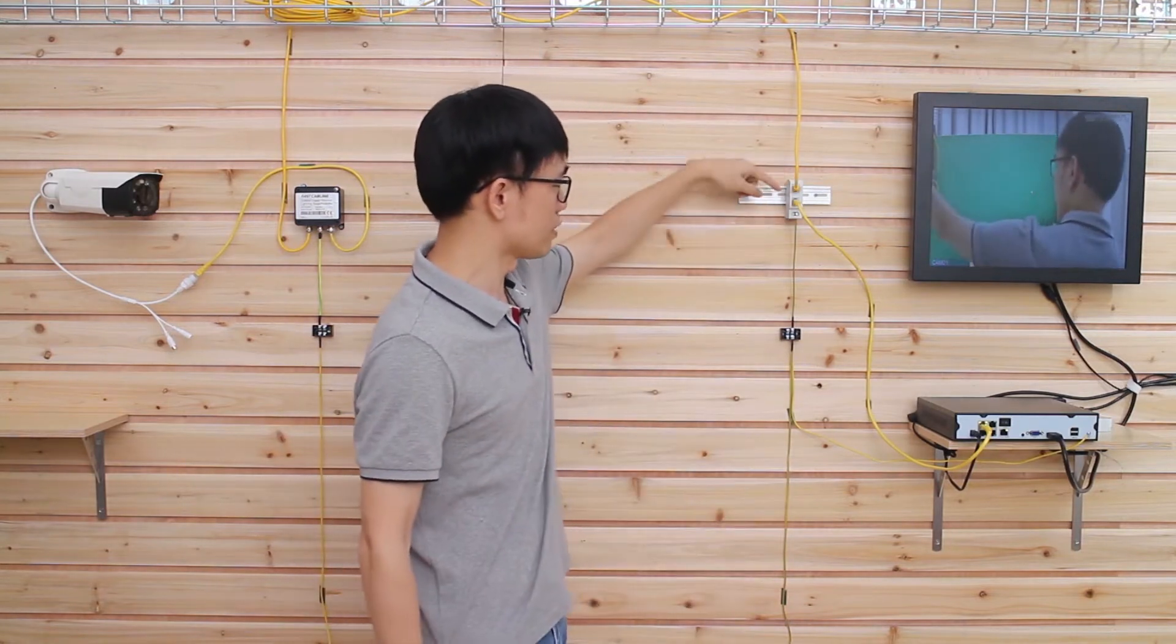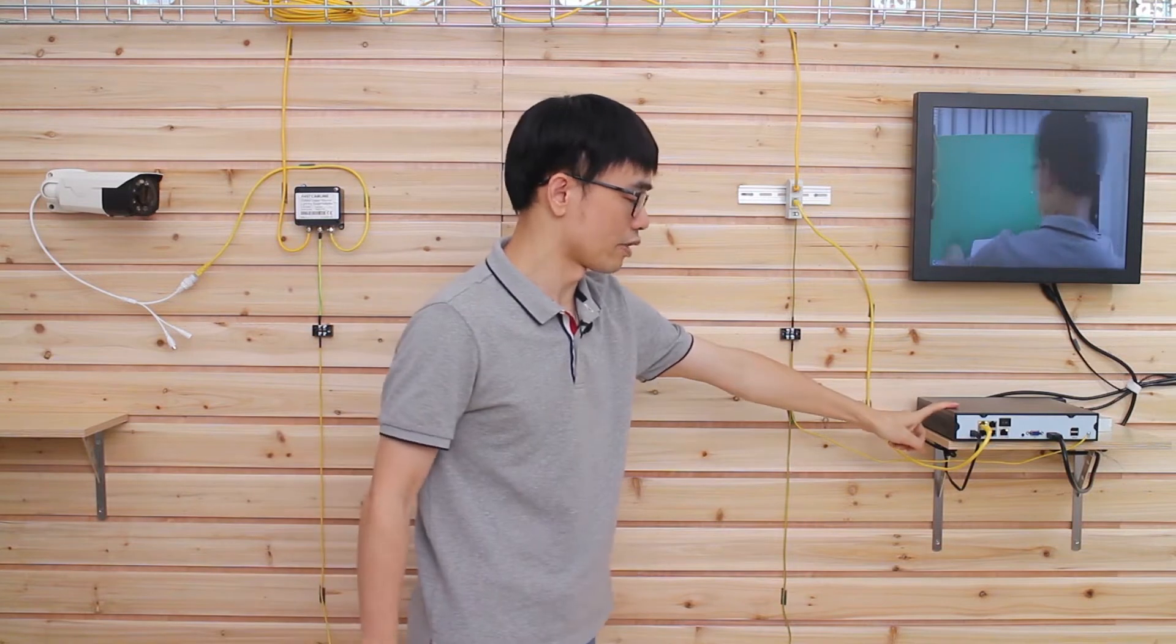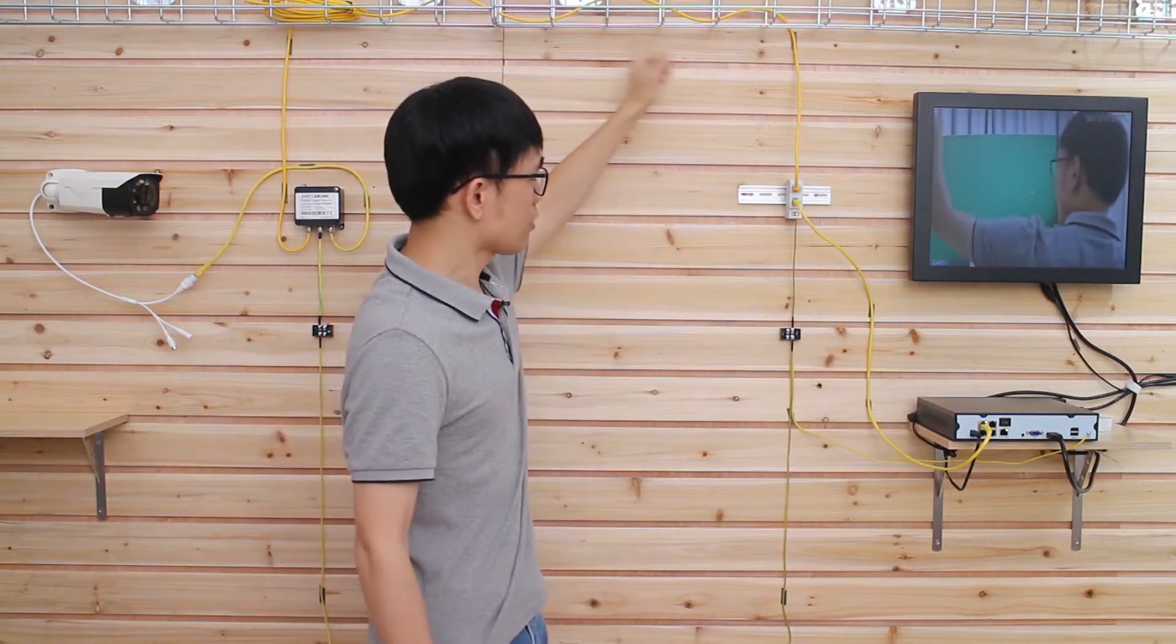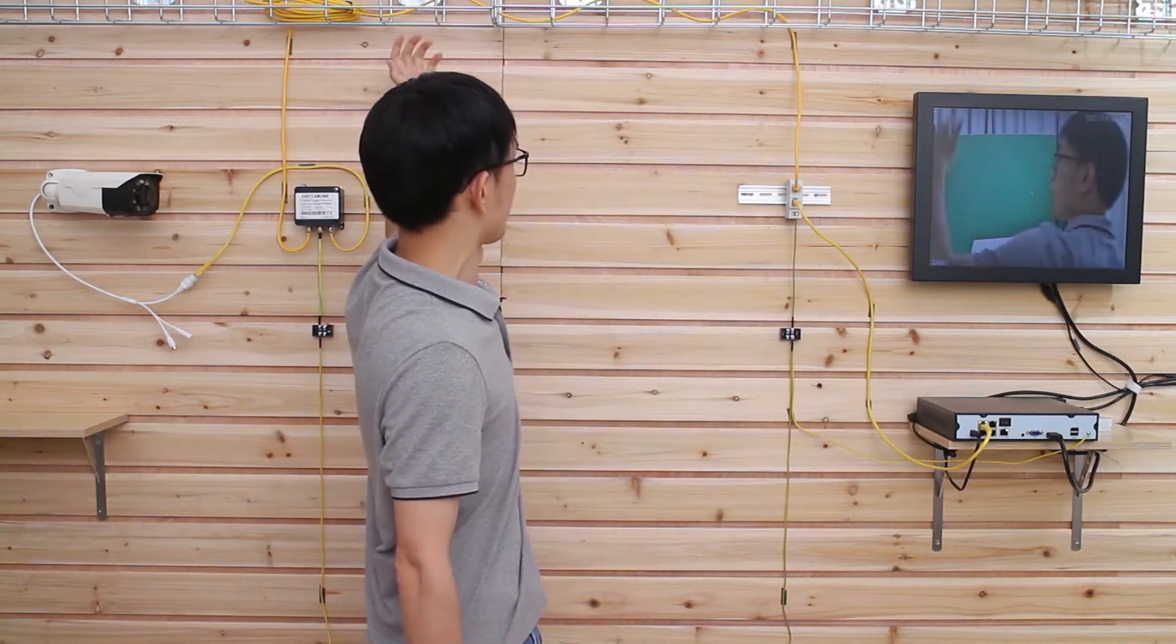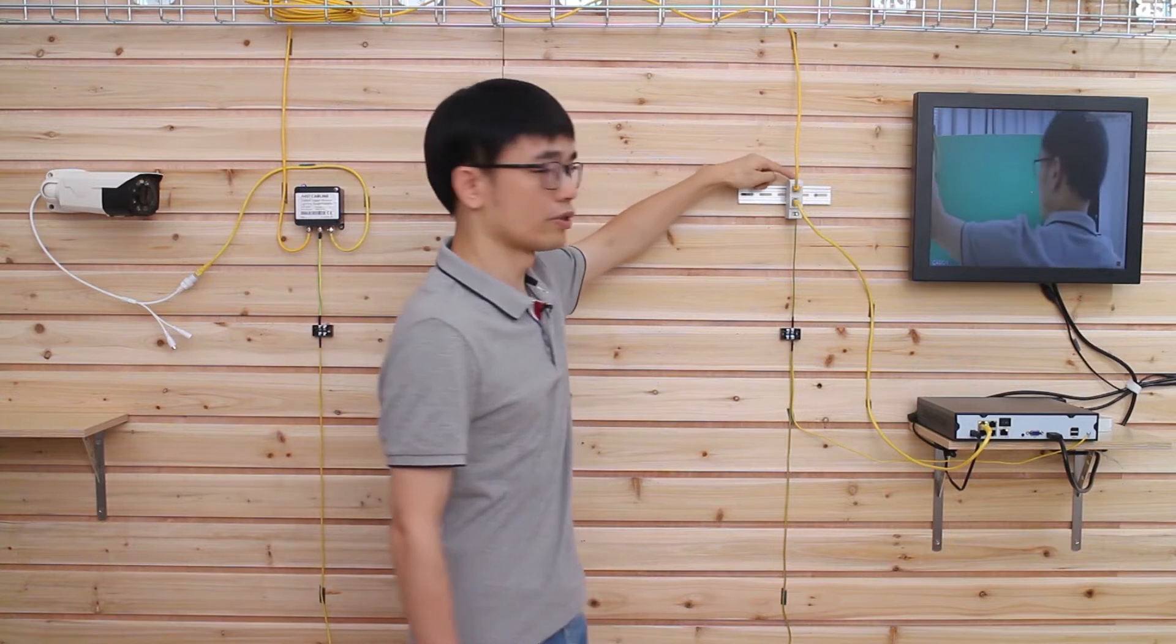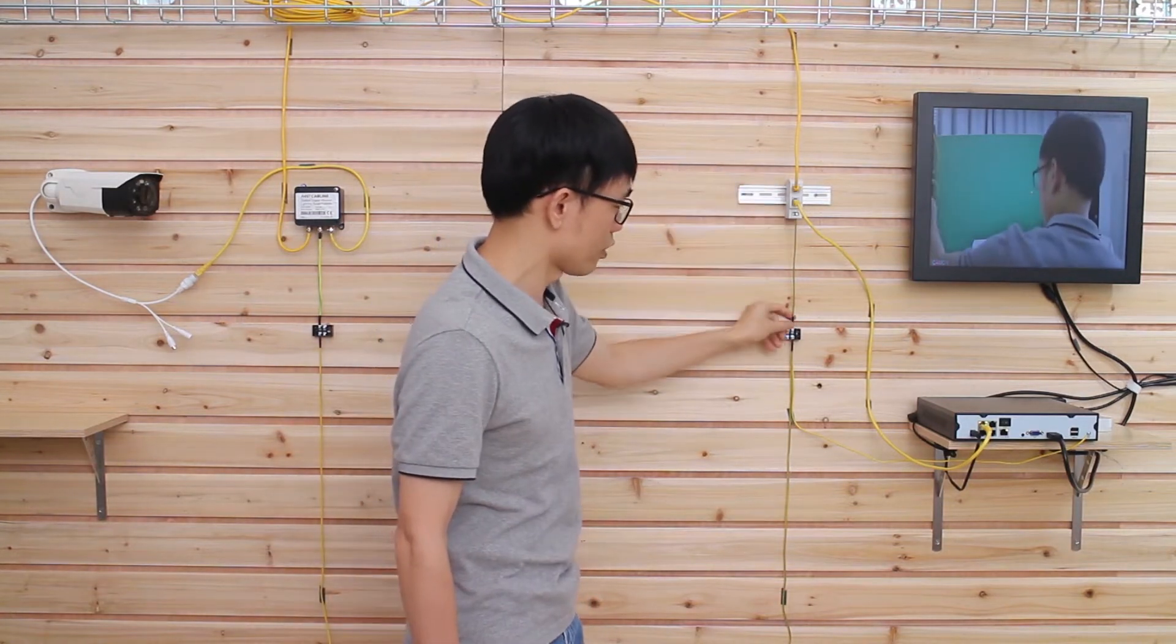Now we have added the first surge protector next to the PoE NVR. The cable just goes to the surge protector before it goes to the NVR. It's quite easy to understand. If there is any surge from outside, it will reach the surge protector first and we have the grounding spot.